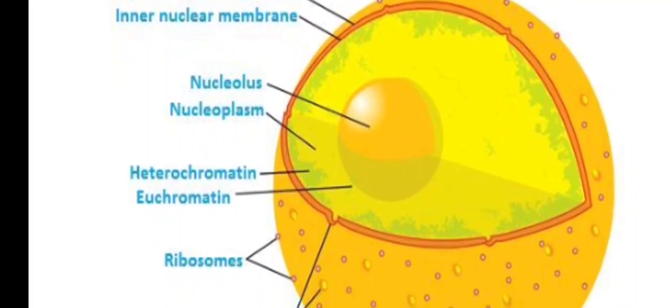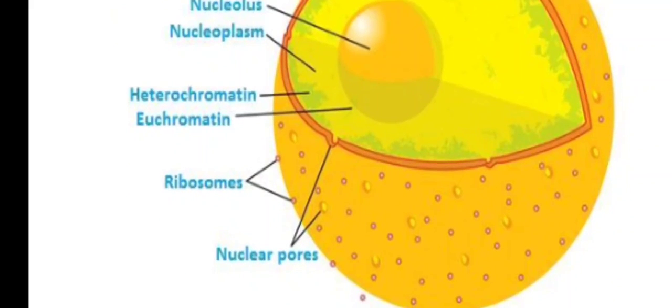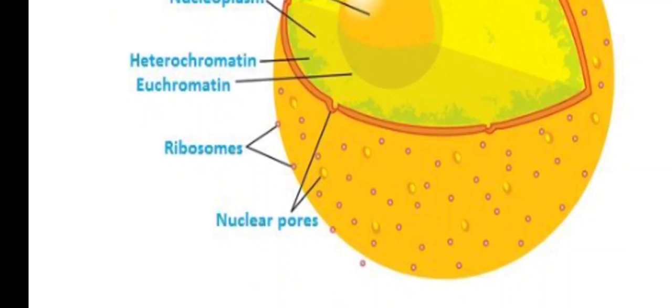The diagram of the nucleus shows the following components: outer nuclear membrane, inner nuclear membrane, nucleolus, nucleoplasm, heterochromatin, euchromatin, ribosomes, and nuclear pores.